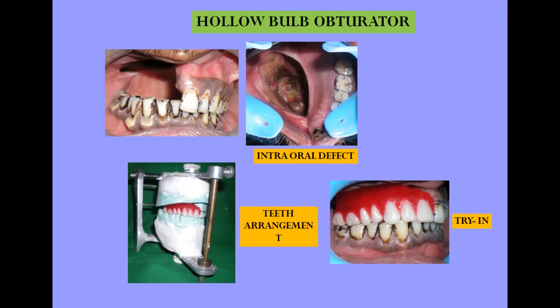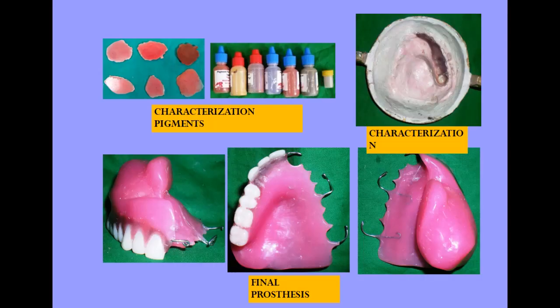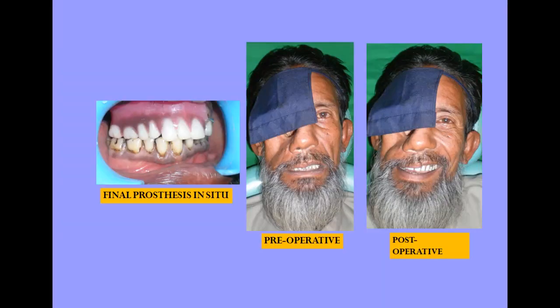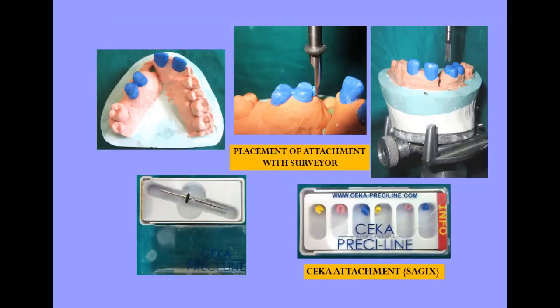This is another case where resection of the maxilla resulted in a defect extending into the orbital region, so the size of the bulb was relatively large and we had to fabricate a hollow obturator. Characterization has been done to match the patient's natural melanin pigmentation and improve aesthetics.